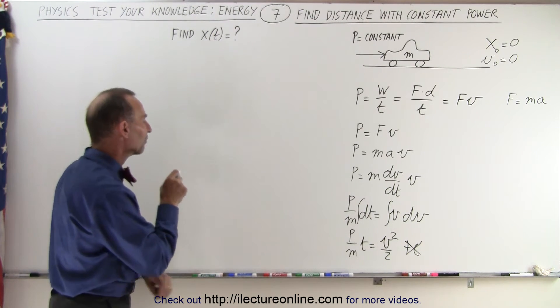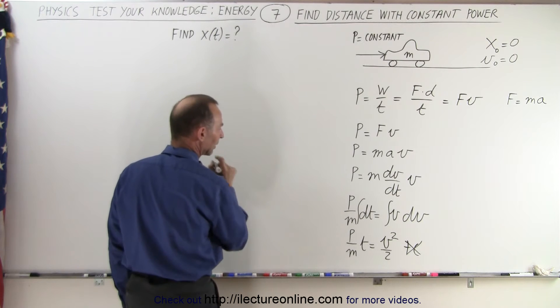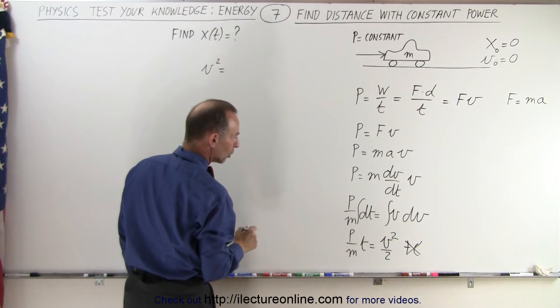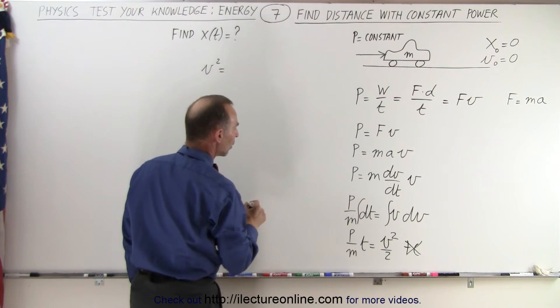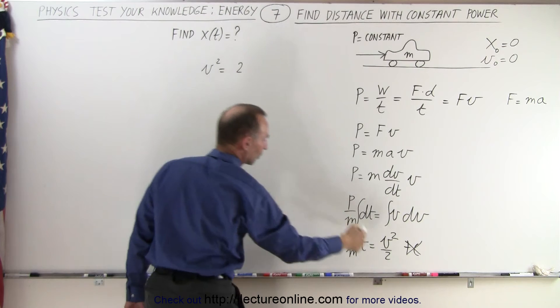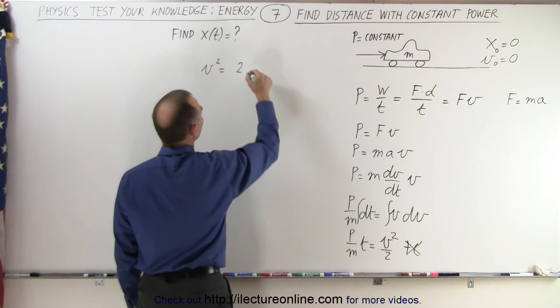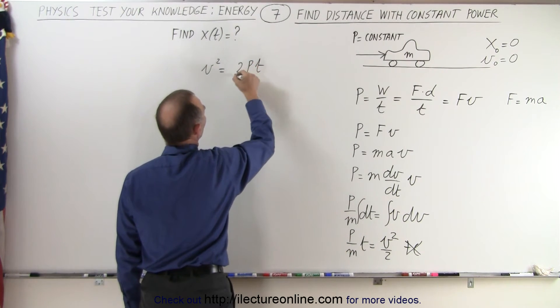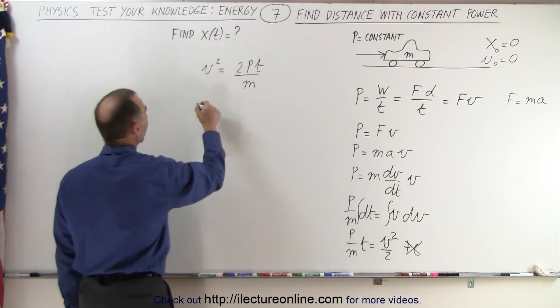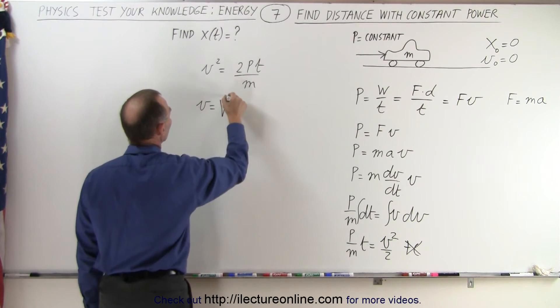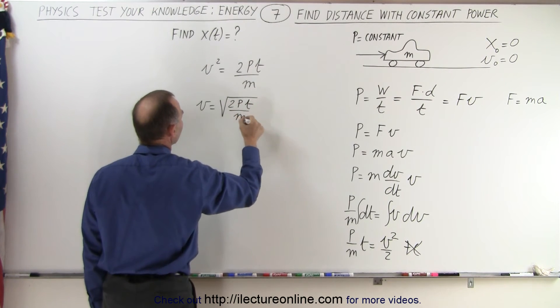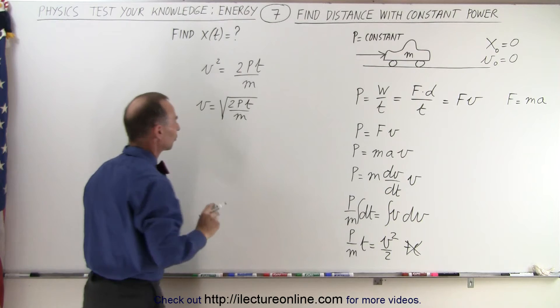All right. So now what we have here is, let's go ahead and write that. We have v² is equal to 2Pt/m. So 2, because we bring the 2 across to 2Pt/m. And now if we take the square root of both sides, we have v is equal to the square root of 2Pt/m. All right. So far, so good.